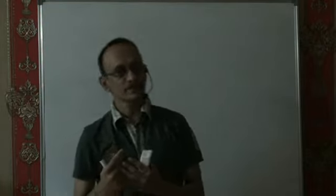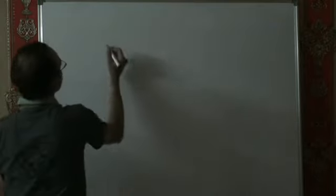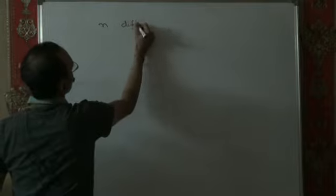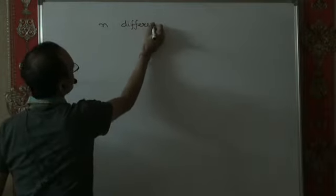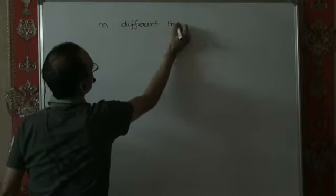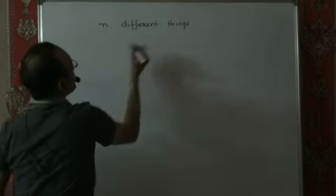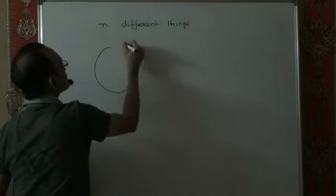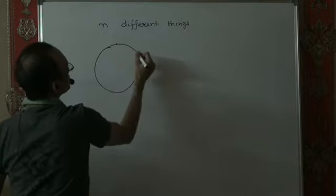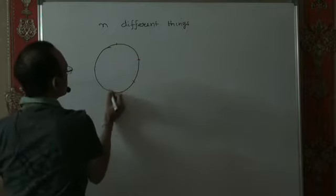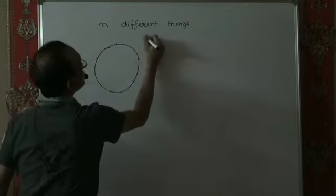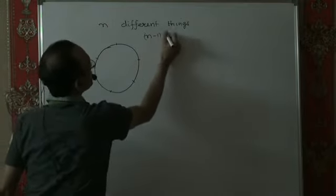What we saw in our previous session was the following. If there were n different things, then the number of permutations of these n different things in a circle — the number of permutations of n different things taken all at a time in a circle — was (n minus 1) factorial.